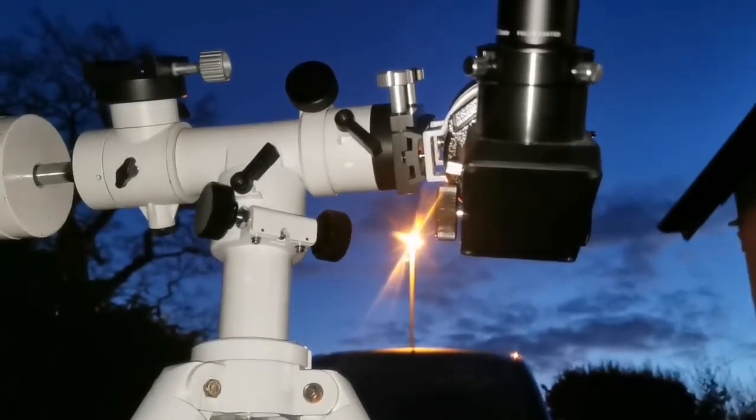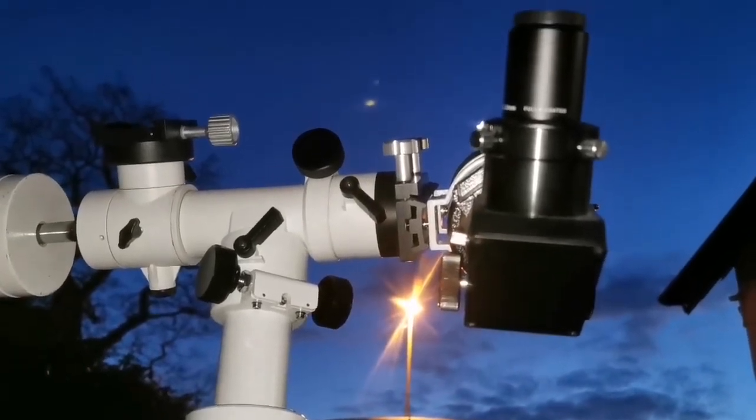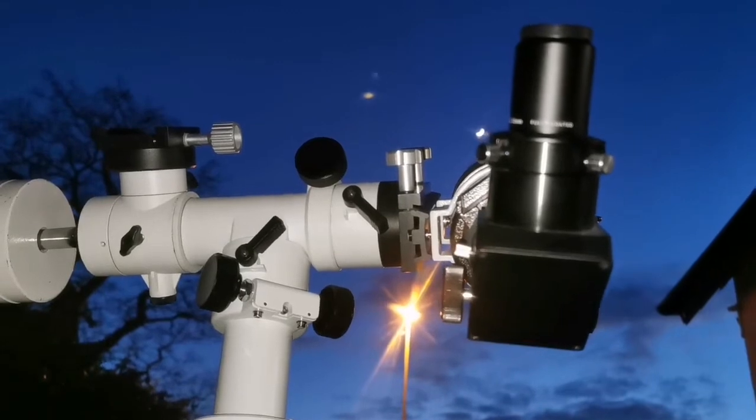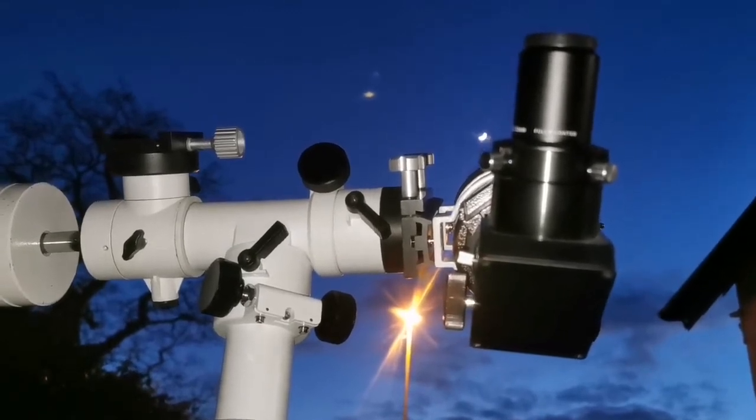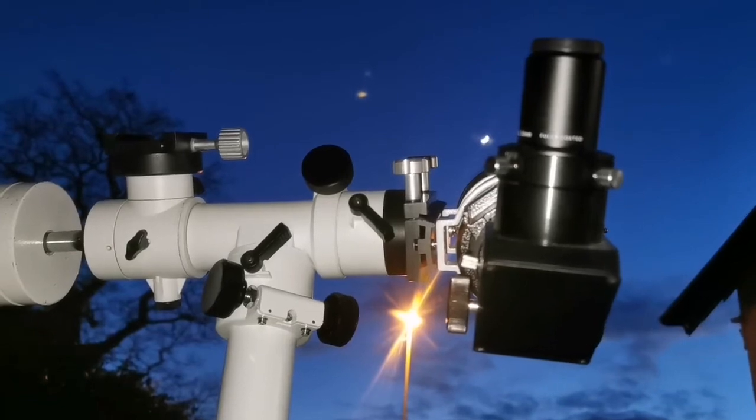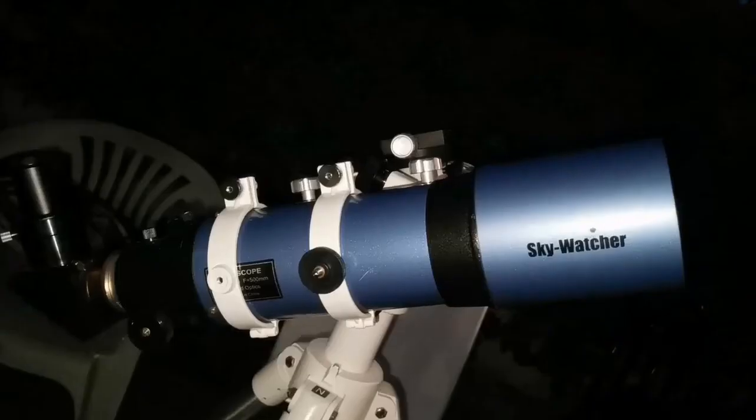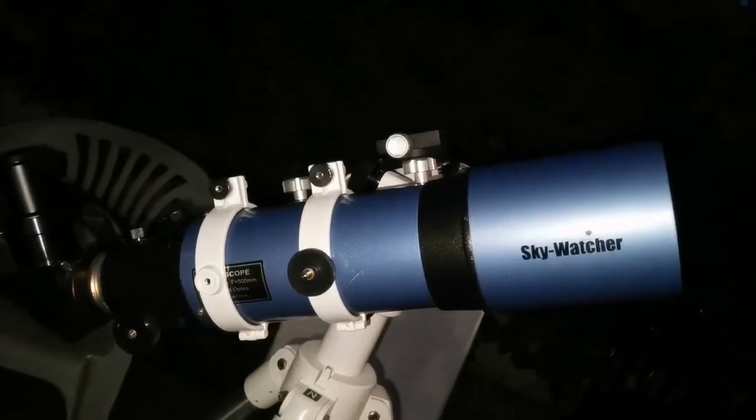I'm using the Skywatcher 102 4-inch F 500 millimeter telescope, an achromatic telescope to look at it more. This is the telescope itself and this is the objective lens with the baffles inside the tube.